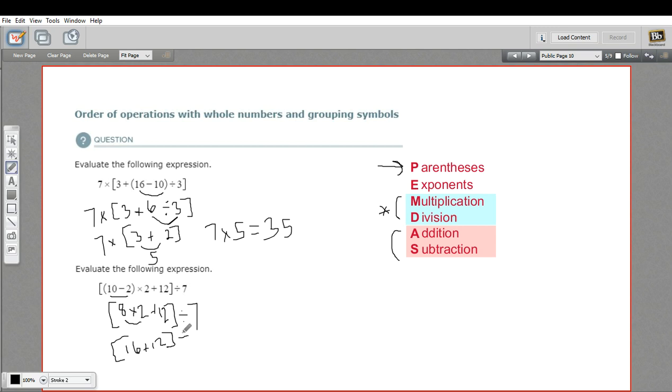And then outside, we have divided by 7. Well, 16 plus 12, that's 28. And since I've resolved it just to a single number, I can drop the parentheses. So 28. So this portion right here was the 28 divided by 7. And that is just 4.